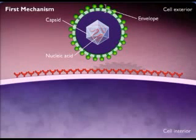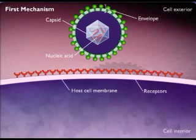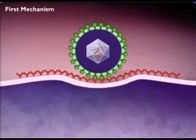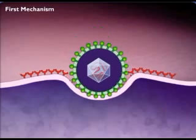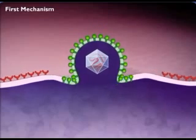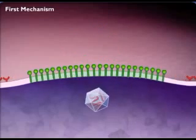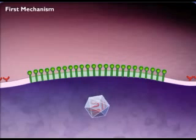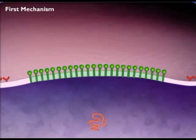There are two mechanisms by which enveloped viruses enter host cells. In one of the mechanisms, the virion attaches to host cell receptors by specific proteins on its surface, called spikes. The envelope of the virus fuses with the plasma membrane of the host, and the nucleocapsid is released directly into the cytoplasm. The nucleic acid then separates from the protein coat.